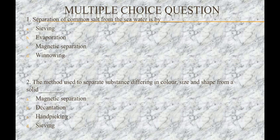The first question is: separation of common salt from sea water is by — options are: A) sieving, B) evaporation, C) magnetic separation, D) winnowing. The answer is B, that is evaporation.